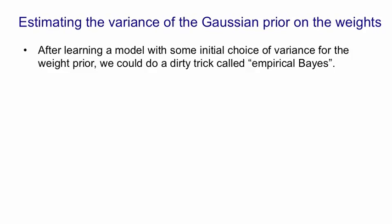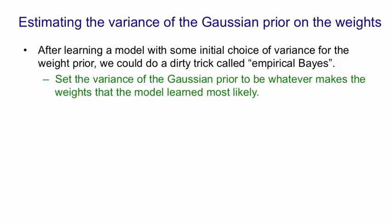Then we use a very dirty trick called empirical Bayes. We set the variance of our prior to be the variance of the weights that the model learned, because that's the variance that will make those weights most likely.